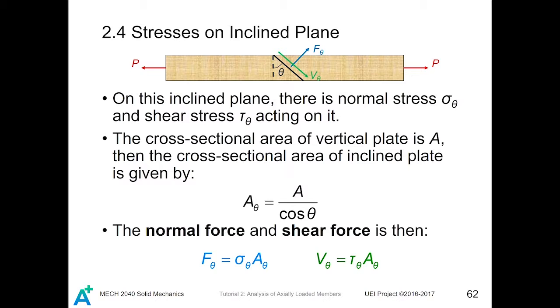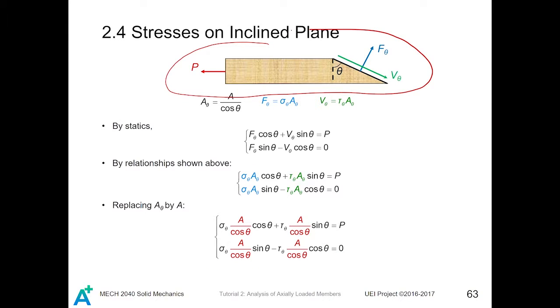Now, consider this cut piece. On this piece of material, there is a transverse load P pointing leftward. And for this inclined plane, there are two forces, namely V theta and F theta. By statics, we decompose those two forces into vertical and horizontal directions. First, we have to know what is theta. For F theta, theta is located here. Notice that don't make the mistake that you put theta here—it is wrong. We derive it by taking this angle as theta.